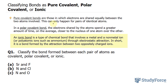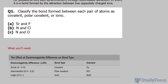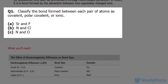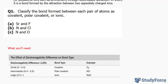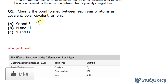It is a bond formed by the attraction between two oppositely charged ions. So in question number one, they ask: classify the bonds formed between each pair of atoms as covalent, polar covalent, or ionic. I'll start with some guessing. With A, we have strontium and fluorine, a metal with a nonmetal, so this is ionic based on the definition above. In B, we have nitrogen and chlorine.